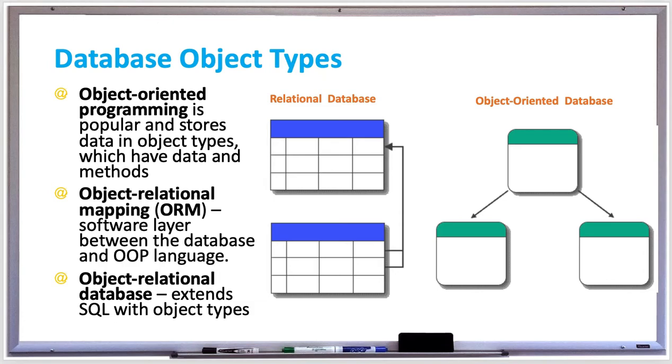So there are also object relational databases. An object database is a database management system, which information is represented in the form of objects as used by object-oriented programming. Some popular databases such as Oracle, PostgreSQL, SQL Server, Informix, and DB2 provide support for objects.